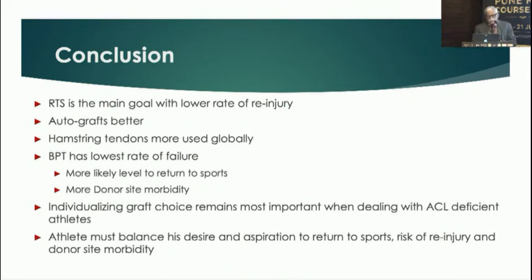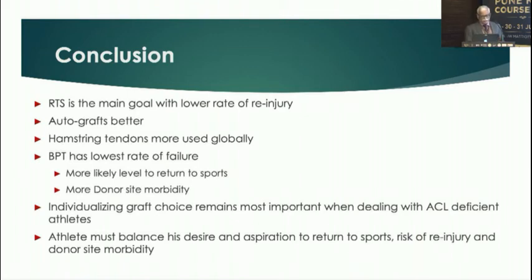In conclusion, return to sports with a lower rate of re-injury is the main goal. Autografts are always better than allografts and synthetics. Hamstring tendons are used more globally, but bone patellar tendon has the lowest failure rate and highest likelihood of return to sports, despite more donor-side morbidity. Individualizing graft choice is most important — considering associated injuries, the athlete's aspirations, risk of re-injury, and donor-side morbidity.